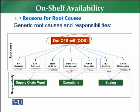The seventh reason is article maintenance. The buyer is maintaining that article — perhaps updating delivery conditions, ordering conditions, or the contract with the supplier. While the article is in maintenance, that will also create an out-of-shelf situation. These are the seven root causes that generate the gap or out-of-shelf situation.